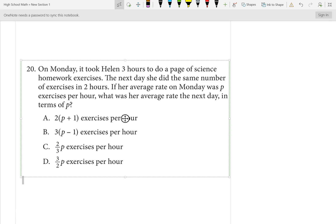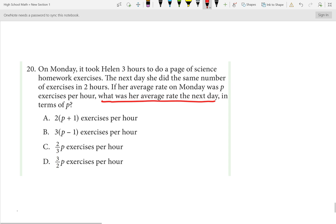Number 20. The question sentence: What was her average rate the next day in terms of P? On Monday, Helen took three hours to do a page of the science homework exercises. The next day she did the same number of exercises in two hours. Her average rate on Monday was P. Hopefully you know that rate, some speed, is some distance divided by time. In this case, our distance is number of problems. Number of problems divided by time. Problems per hour, say, in this case.